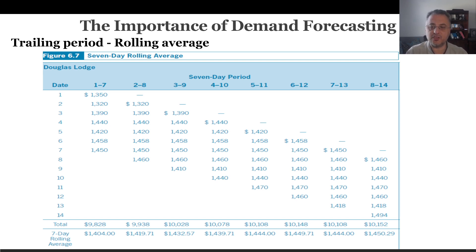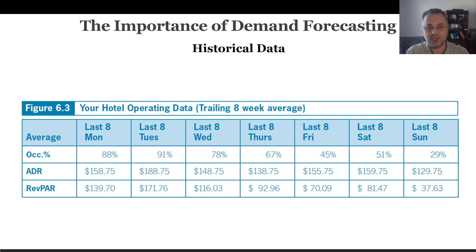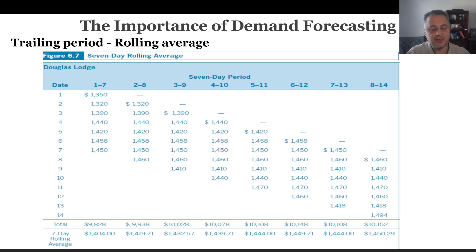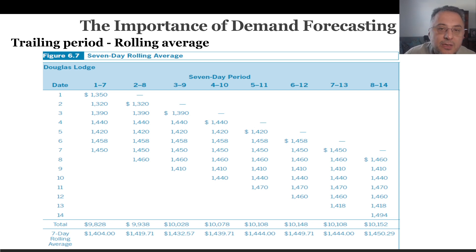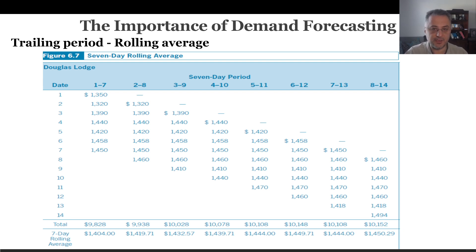A rolling average is an average calculated using historical data generated during a changing time period. In hotel industry, you might look at eight Mondays, eight Tuesdays, etc., because each day has a different demand pattern. Regardless of the type of average utilized, revenue managers must track their historical data because it's from sales histories that they will be better able to predict current and future operating data. That is why it is important to know what happened in the past.